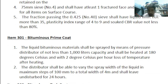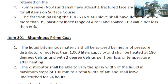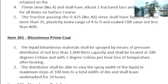Item 301 is Bituminous Prime Coat. Number one: liquid bituminous material shall be sprayed by a pressure distributor of not less than 1,000 liters capacity, heated at 180 degrees Celsius with 2 degrees Celsius per hour loss of temperature after heating. With ambient temperature at about 30°C, the curing time works out to approximately 75 hours — about three and a half days, or effectively four days.